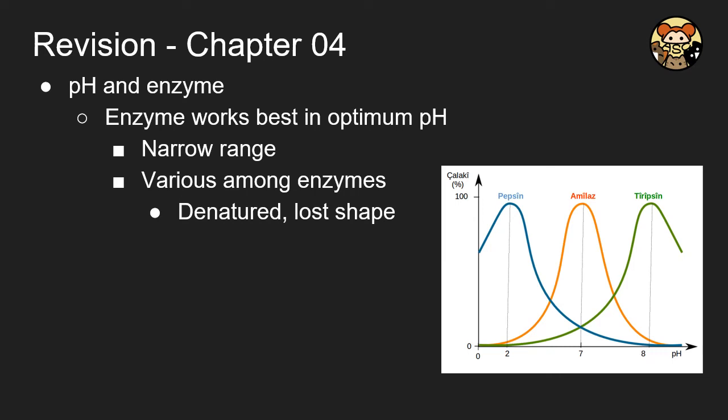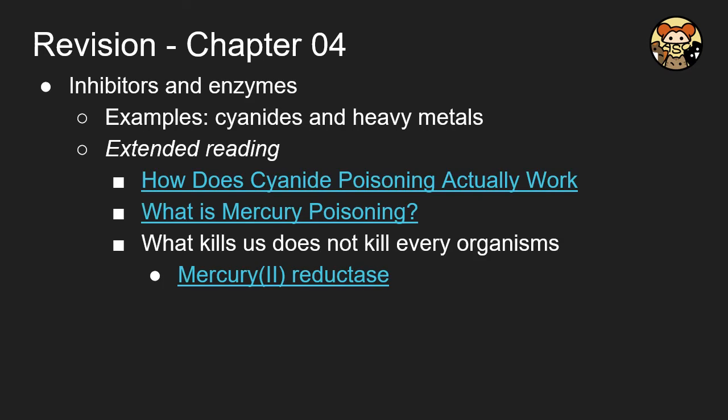How do inhibitors interact with enzymes? The most common example will be cyanide and also heavy metals like mercury or lead. And here are some extended suggested readings for you guys. If you're interested in it, you may google it.